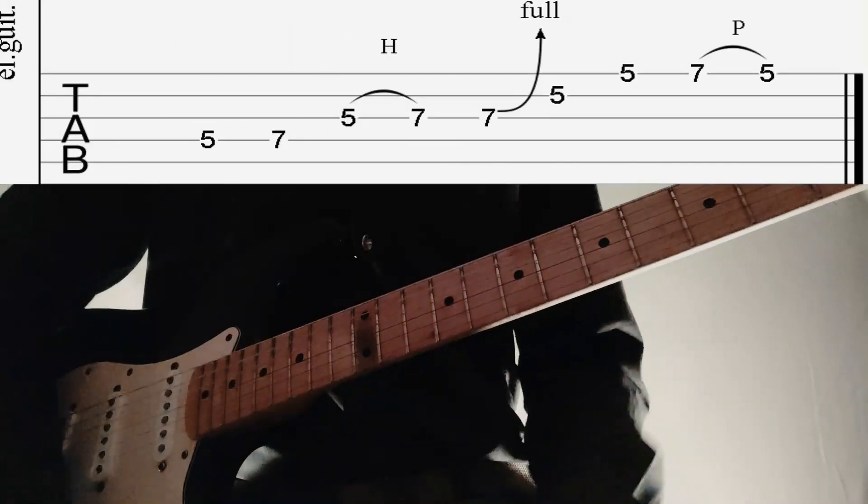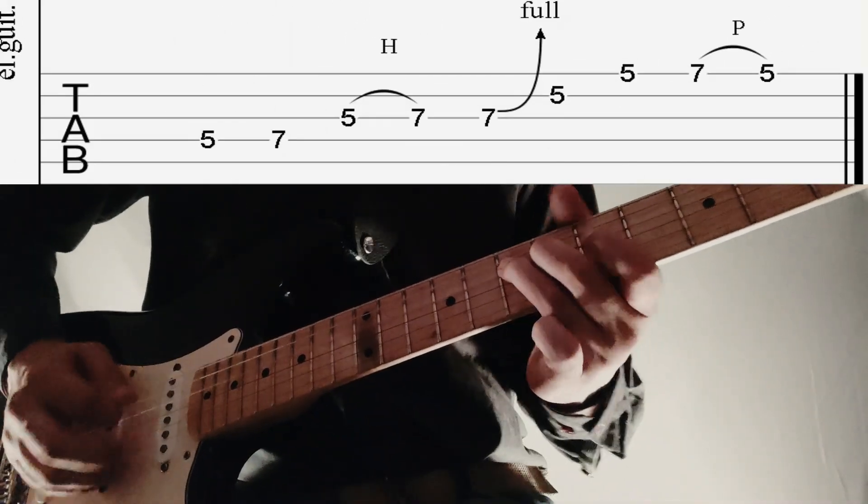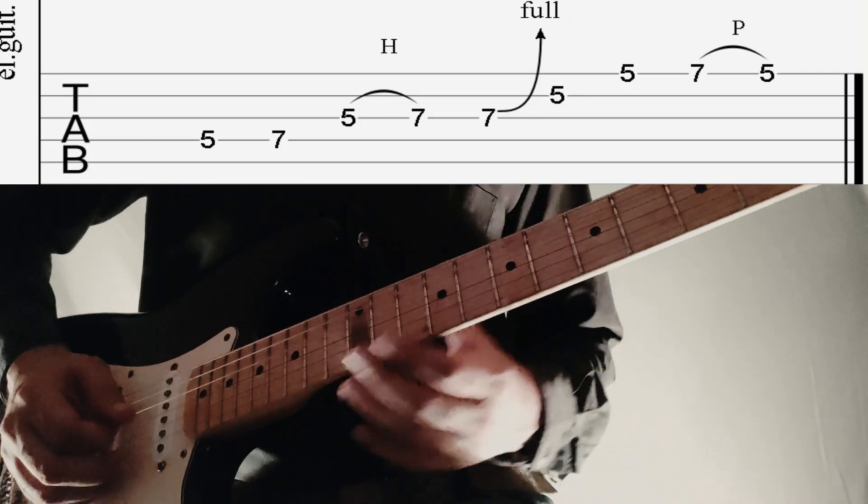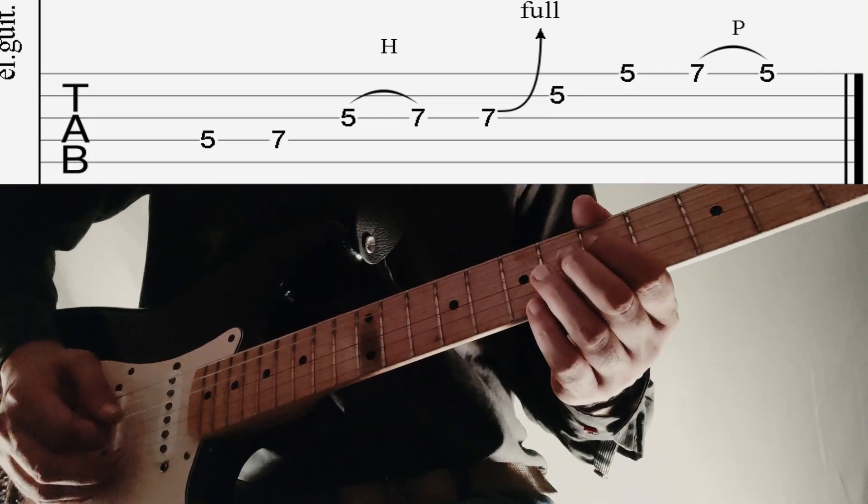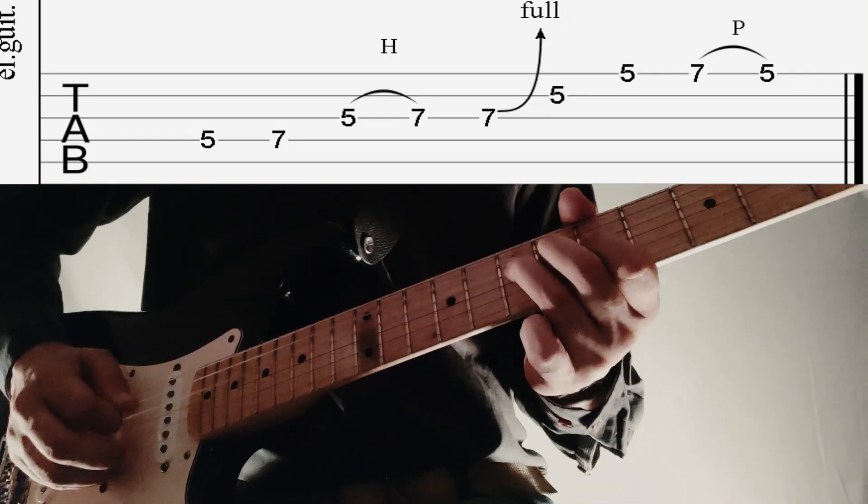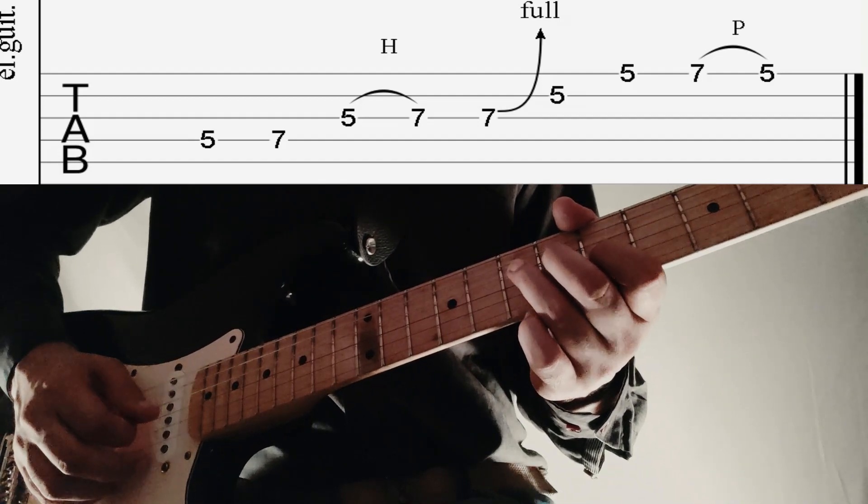Let's start with the second section. We'll start with 5 and 7 on D string followed by a hammer-on from 5 to 7 on G string.